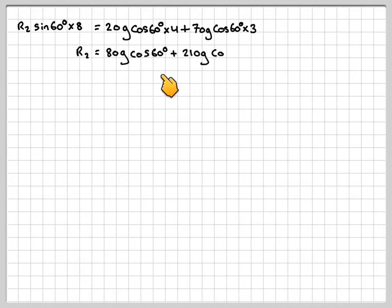So, writing those out again. We can make R2 the subject by just dividing by 8 sin 60. And then 4 times 20 makes 80G cos 60. And then 70 times 3 gives me 210G cos 60 divided by 8 sin 60. So, using the fraction button on my calculator, that will give me 205.103 Newtons.